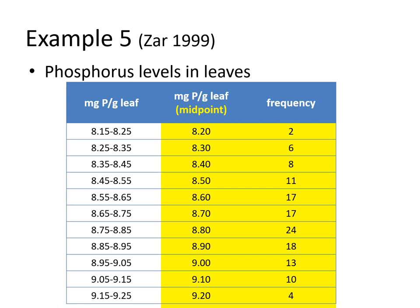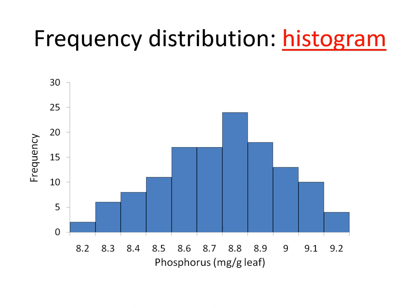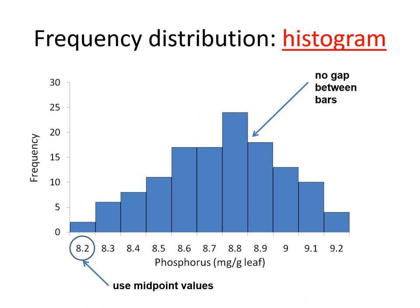You get a specialized type of bar graph now called a histogram. What is the difference of a histogram from a bar graph? One, you don't see any gaps between the bars, unlike the bar graphs we were using earlier. And instead of the range along the x-axis, we're seeing the midpoints. That's the basic difference between a histogram and a bar graph.